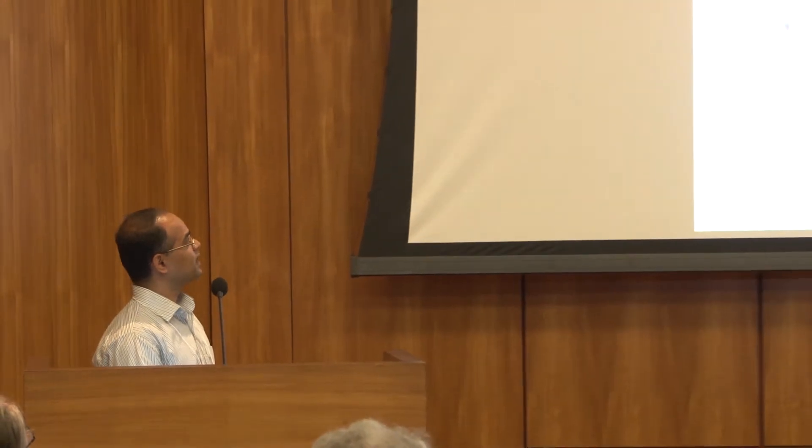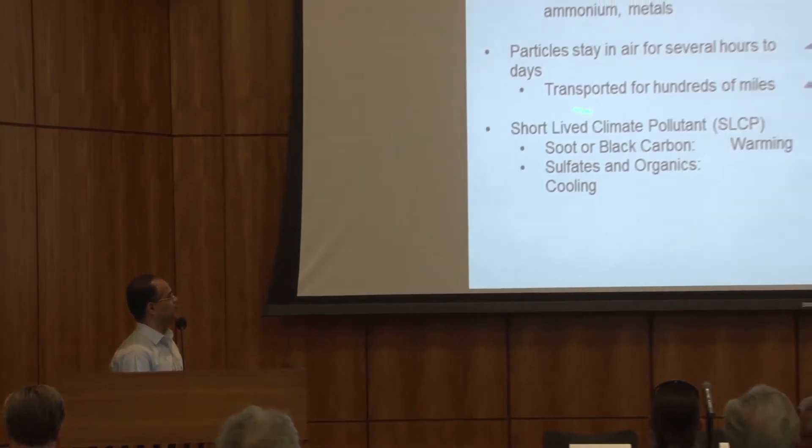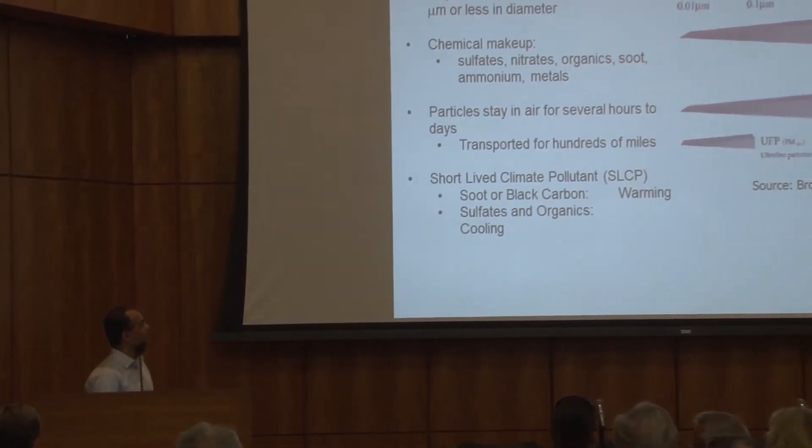So what are fine particles? Fine particles are particles that have a diameter of 2.5 micrometers or lower and they are suspended in the air. The chemical makeup is made of sulfates, nitrates, organic, soot, ammonium, and metal — quite a complex chemical mixture. They do stay in the air for a long period of time, several hours to several days, and as a result they can be transported for hundreds of miles.